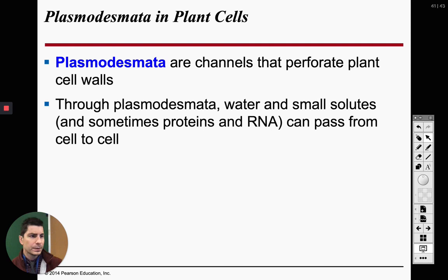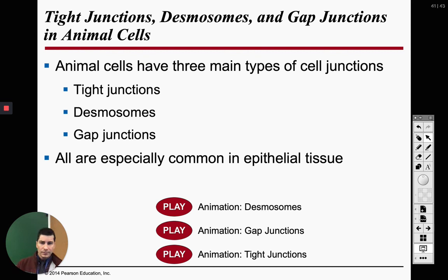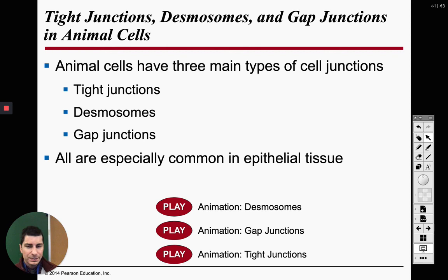That's plasmodesmata — it's only in plant cells. For animal cells, we are going to have three different types of cell junctions. The first is tight junctions, which seal our cells together in a watertight seal, allowing one cell to butt right up against another cell. This is good because it allows us to make tissues.